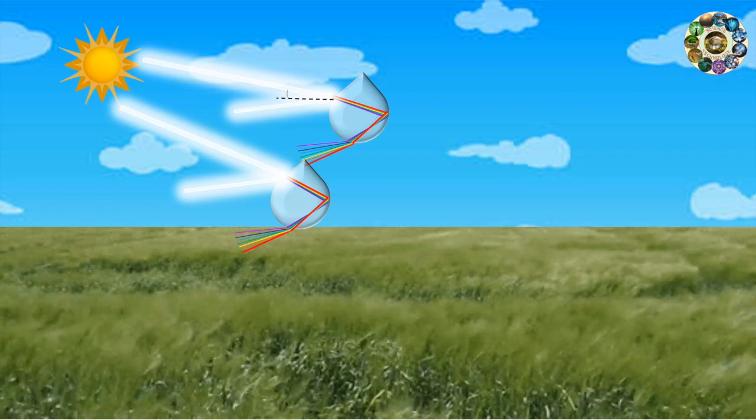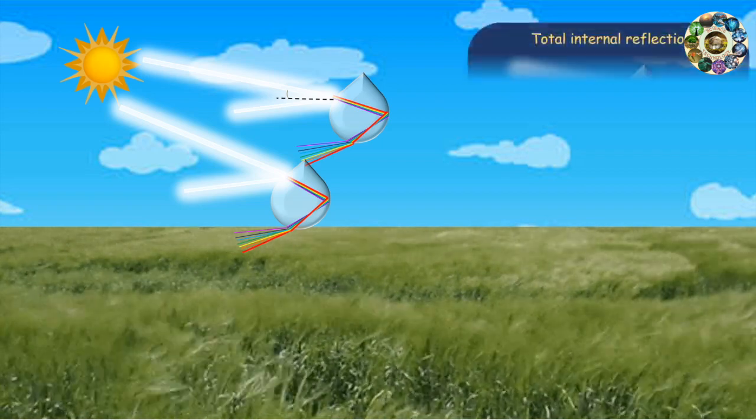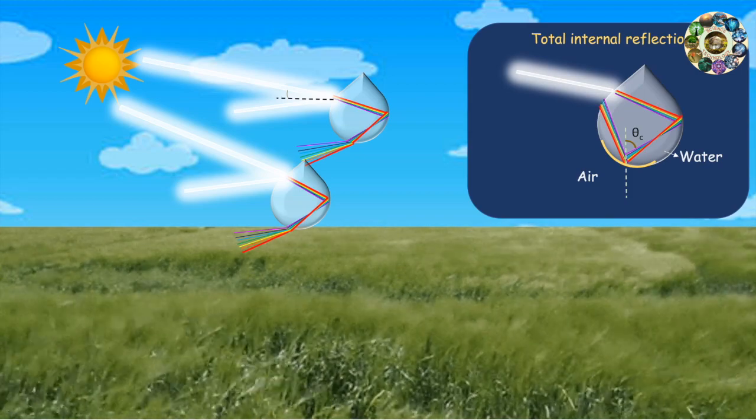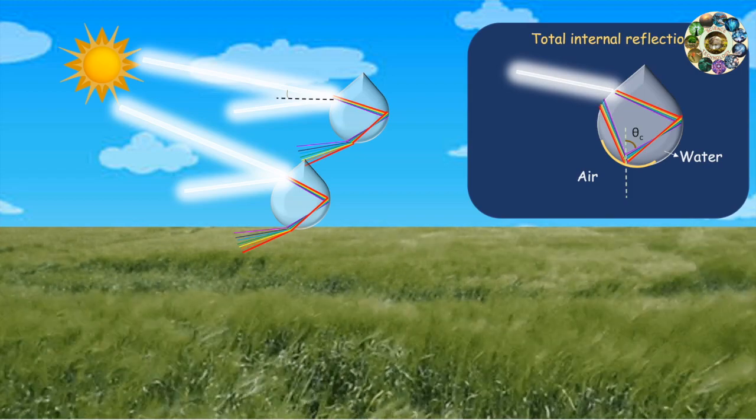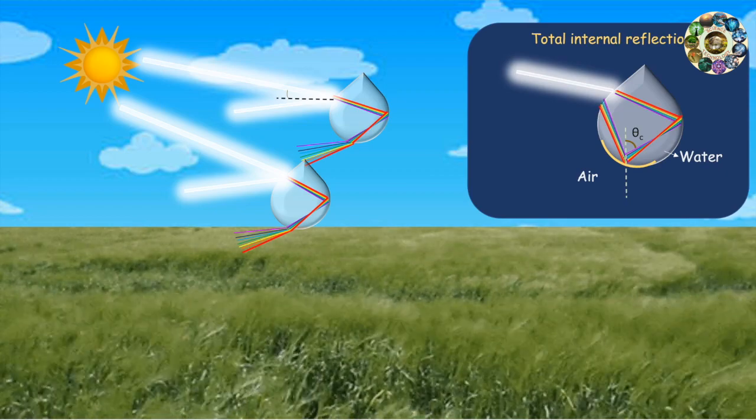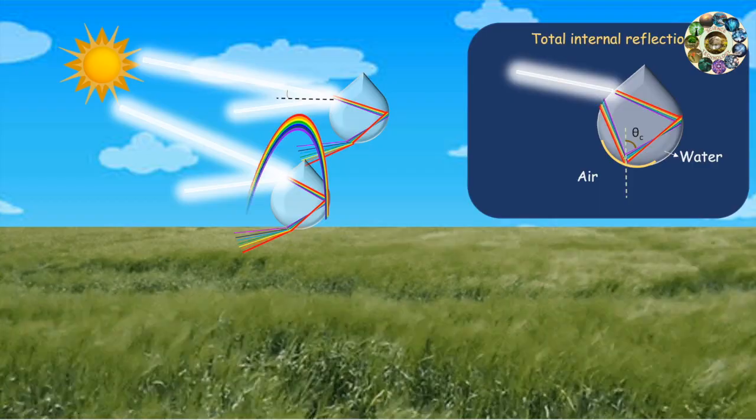For some cases, if angle of incidence will be greater than critical angle at water-to-air interface, then total internal reflection will occur. In this case, there will be no rainbow. So, the process of light dissipation through water droplets leads to form a rainbow.